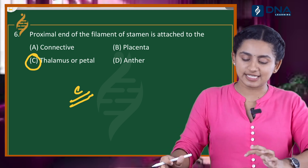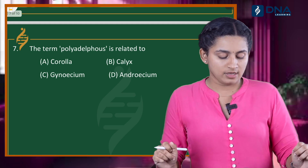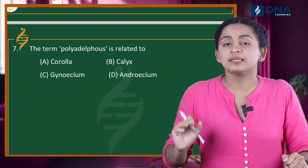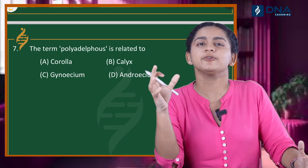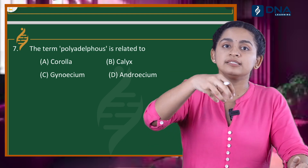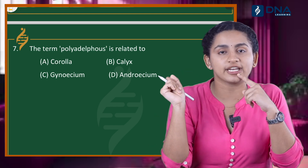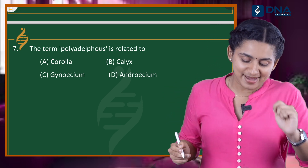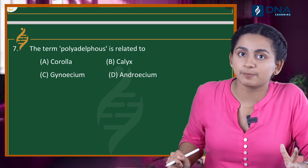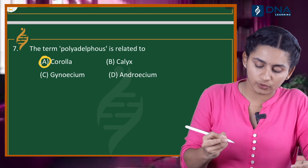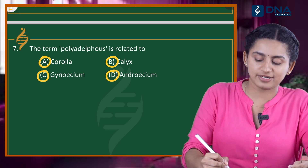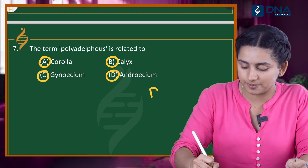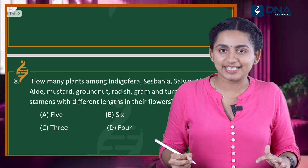So let's move on to question number 7. The term polyadelphous is related to what? Polyadelphous refers to the condition of stamens in the male reproductive organ. The correct answer is Option D — androecium.